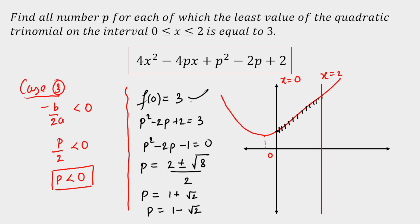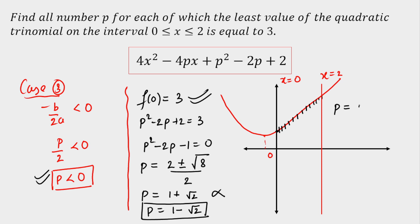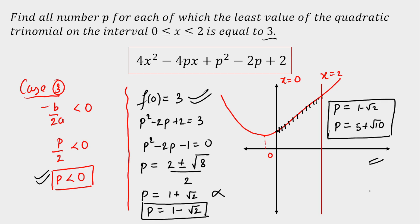Our condition requires P < 0. The first value, 1 + √2, is greater than 0, so it's rejected. The value 1 - √2 is negative, so it is accepted. Therefore, the final values of P are 1 - √2 (from Case 3) and 5 + √10 (from Case 2). These are the only two values for which the least value equals 3 in the interval 0 to 2.